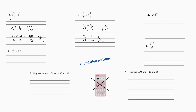Next one: cube root of twenty-seven. You don't need a calculator for this — you're just looking for what number multiplied by itself three times gives you 27. One times one times one is not 27. Two times two times two equals eight, so that doesn't work. Three times three times three equals 27, so the answer is three. Try to remember that off the top of your head if you can.